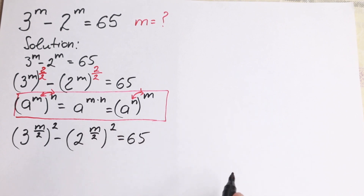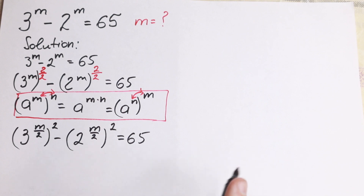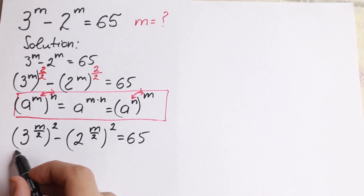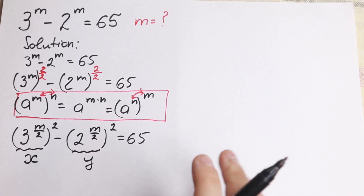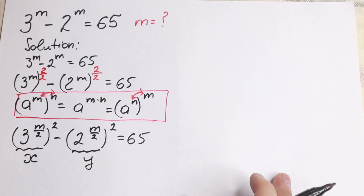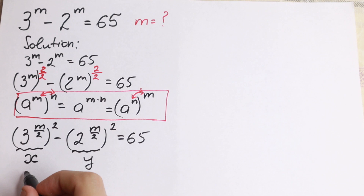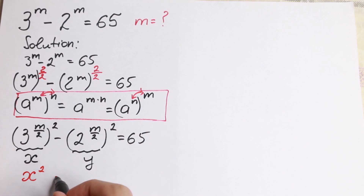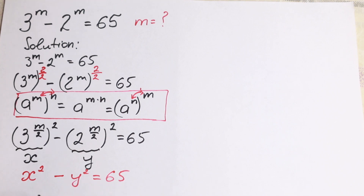Now let x equal 3 to the power m over 2, and y equal 2 to the power m over 2. This substitution makes things a little easier. So right now we have x squared minus y squared equal to 65.